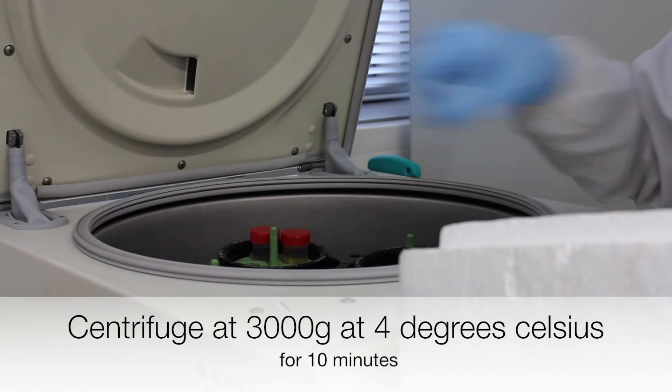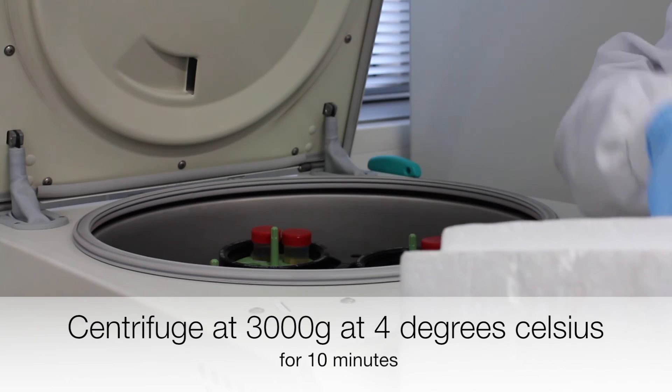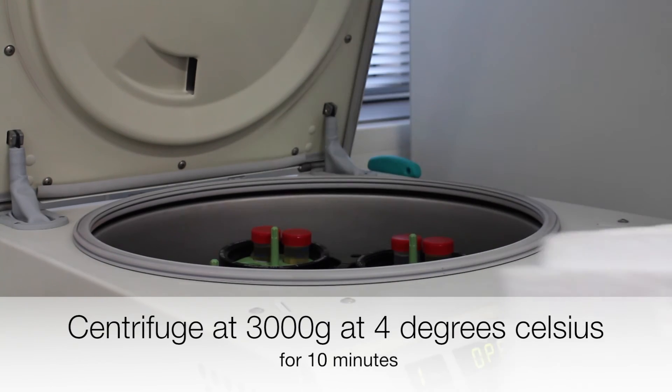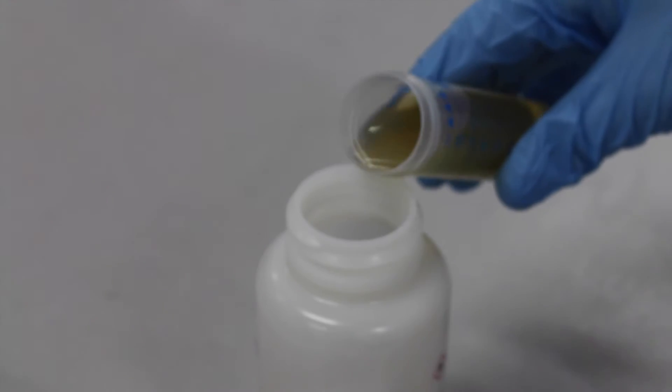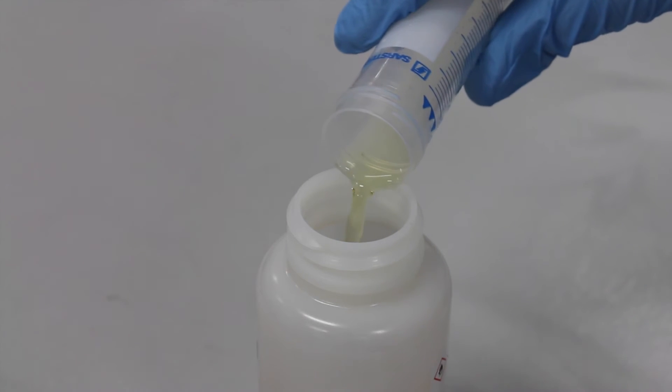The tubes are centrifuged at 3000 g at 4 degrees Celsius for 10 minutes. As much of the supernatant as possible is removed without disturbing the pellet.